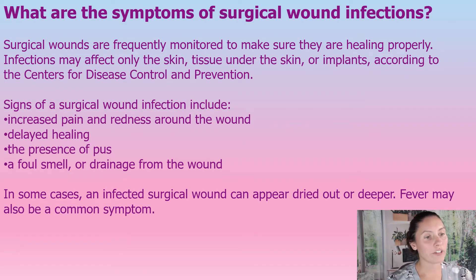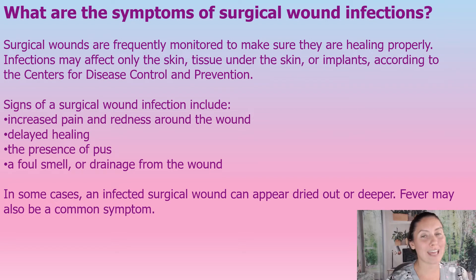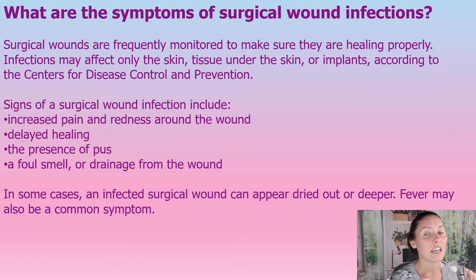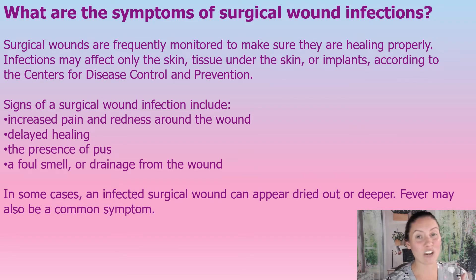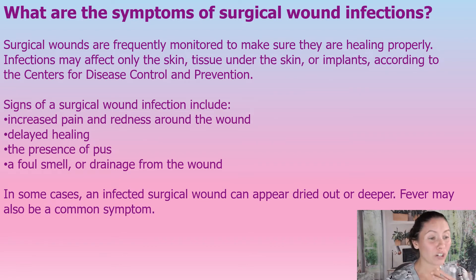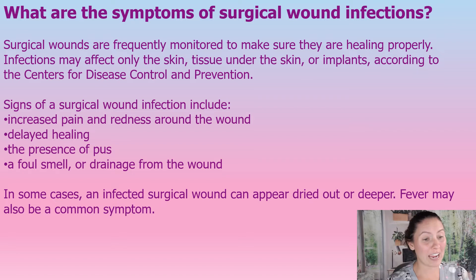Signs and symptoms of surgical wound infections: surgical wounds are frequently monitored to make sure they are healing properly. Infections may affect the skin, the tissue under the skin, or any implants. Signs of surgical wound infection include increased pain and redness to the area, delayed healing, presence of pus, foul odor, or an increase in drainage from the wound. In some cases, an infected surgical wound can appear dried out or deeper. Fevers can also be a common sign of these infections.